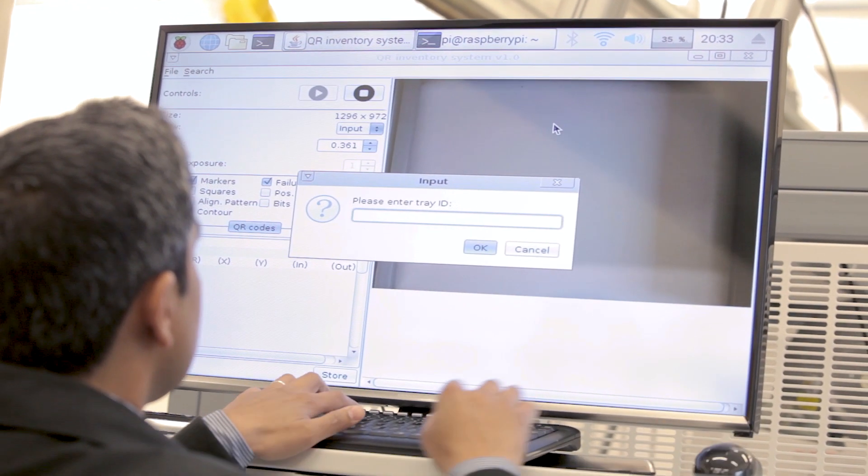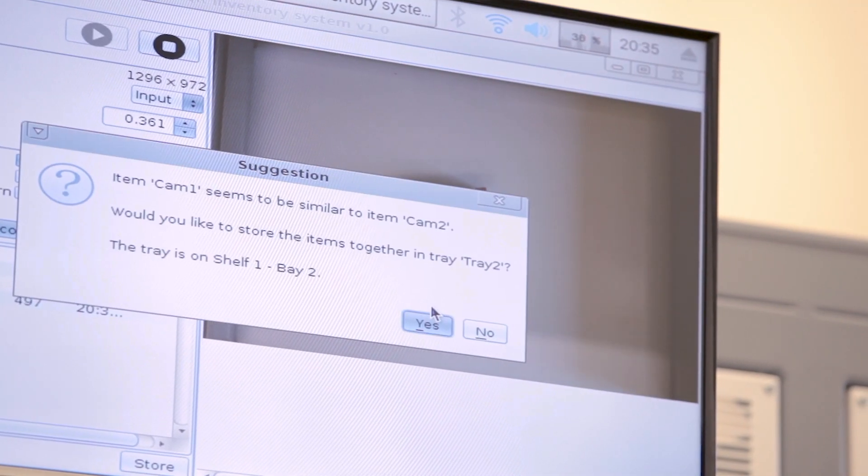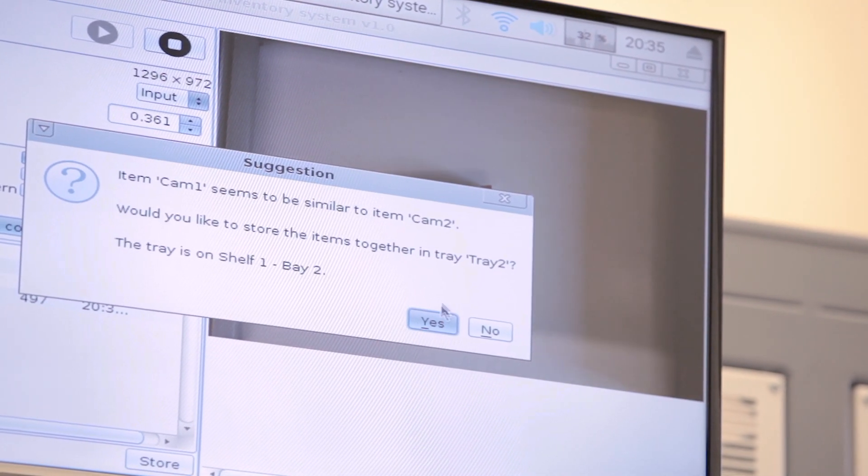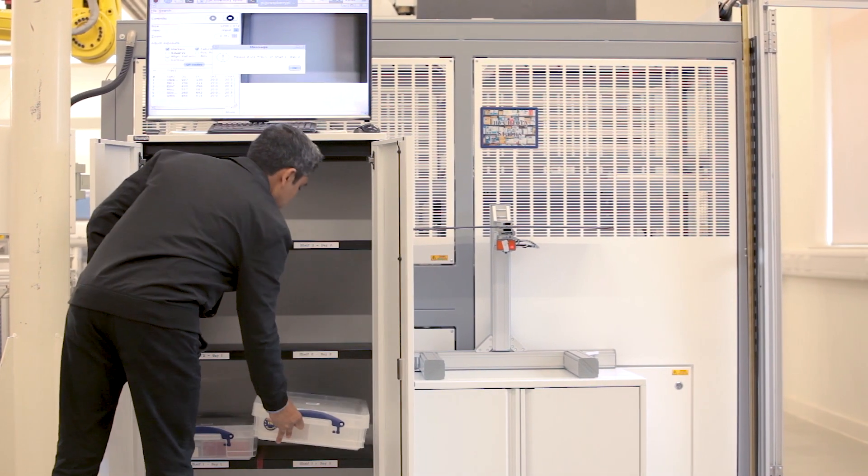For example, we can browse the contents of the tray if we know the tray ID. If an individual part is scanned under the vision system and a similar part was seen before in a tray, the vision system can recommend storing that part together with an old tray that was already stored before.